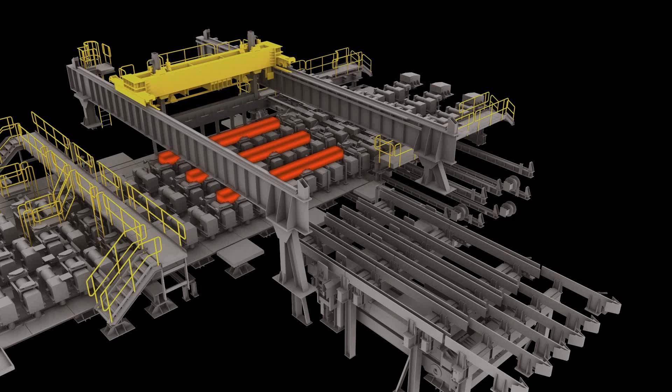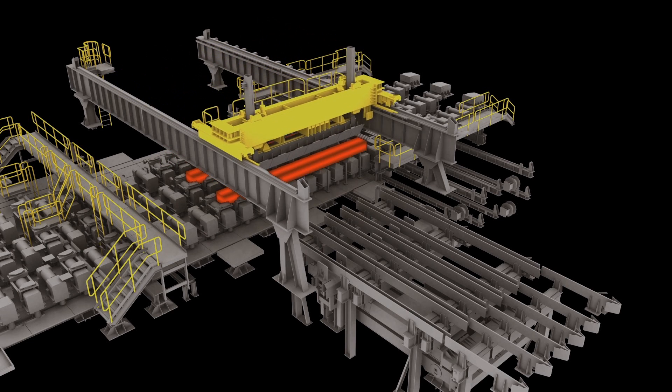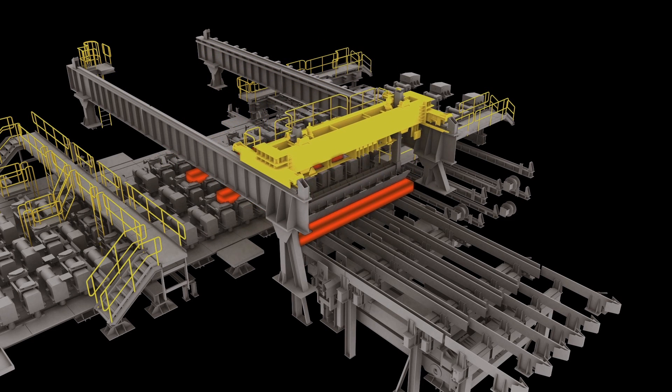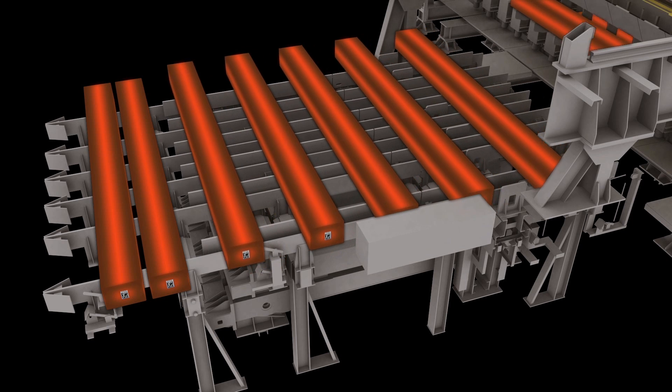The blooms then travel to an aerial transfer, which picks up the product and moves it to the cooling bed. On the cooling bed, we weigh each bloom and tag it with a bar code.